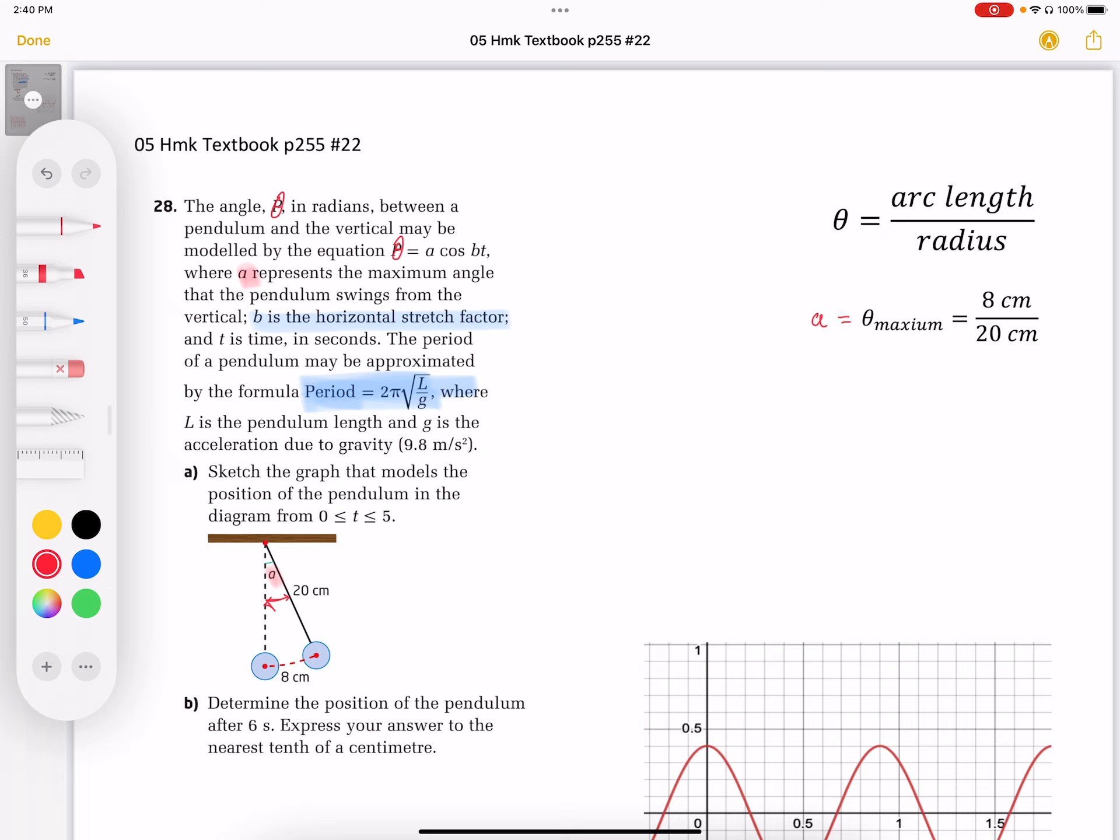So we're going to define a few things here. First of all, the arc length is defined as the angle. So the angle in radians is defined by the arc length divided by the radius.